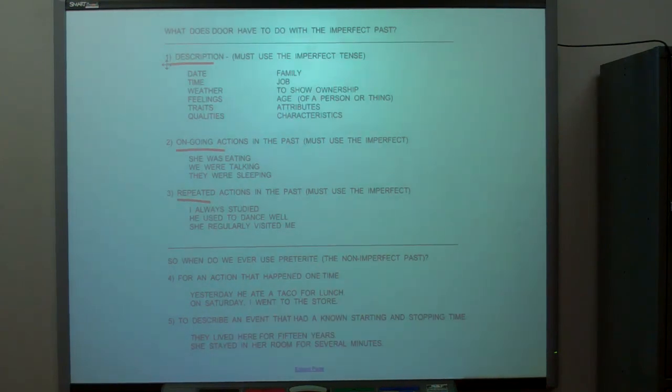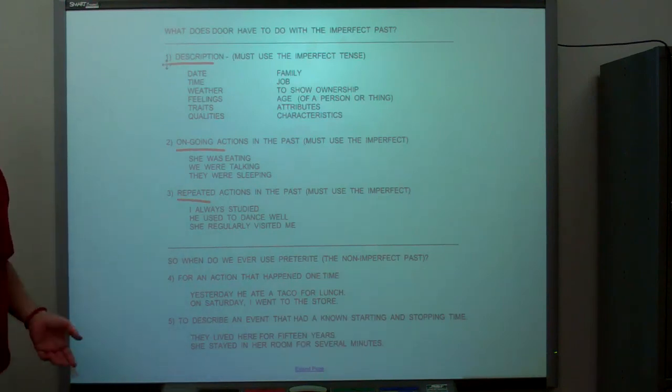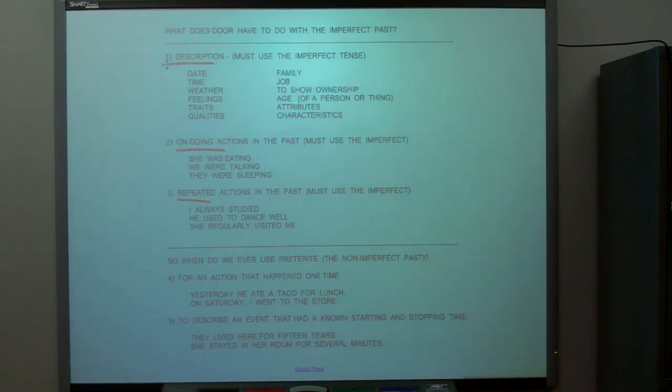Mr. Holt always wore silly ties or repeatedly wore silly ties. Now, where do you use the preterite that if it ends with an E, it was done by me? If it ends with an O, it was done by Joe? Two times. One, an action that happened one time. Yesterday, he ate a taco for lunch.